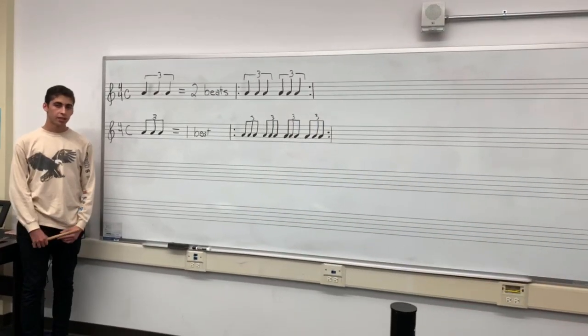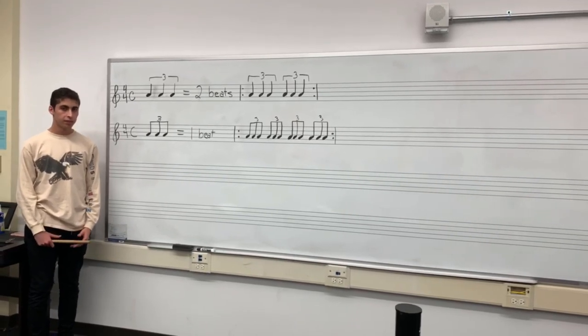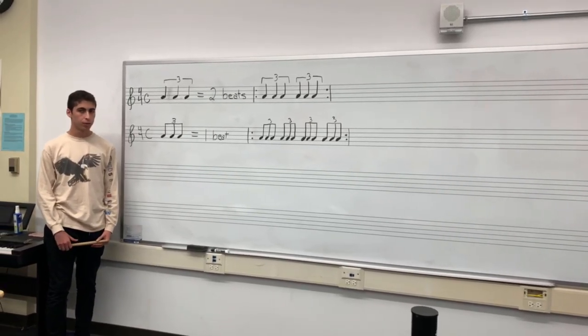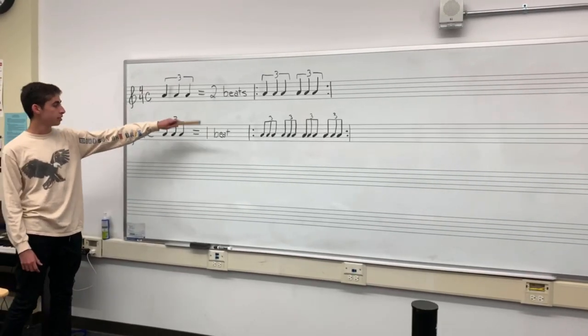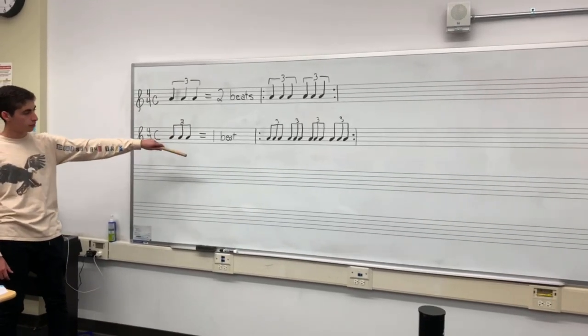So now we'll be talking about triplets. A triplet is the division of a note into three equal parts, when it would otherwise be two equal parts. So in this case, we have three quarter notes, which equates to two beats, and three eighth notes, which equates to one beat.